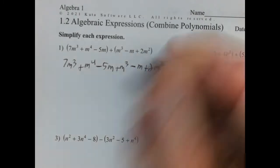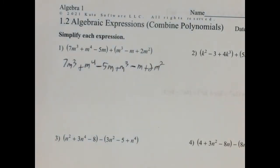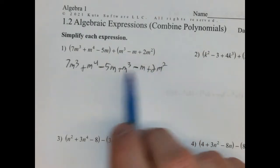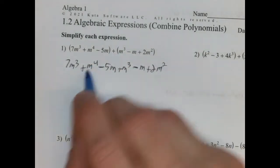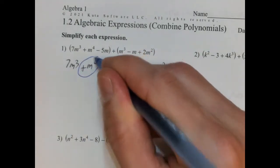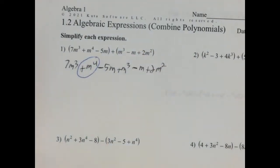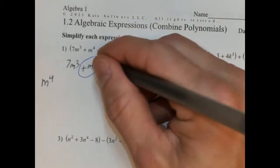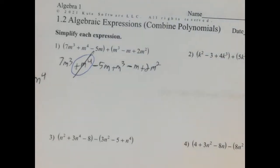And now from here, we're going to start combining like terms. We'll start with the term of the highest exponent, which is m to the fourth, which is positive. I see no other m to the fourths, so that's going to go down below here — m to the fourth — and we're going to cross that out.